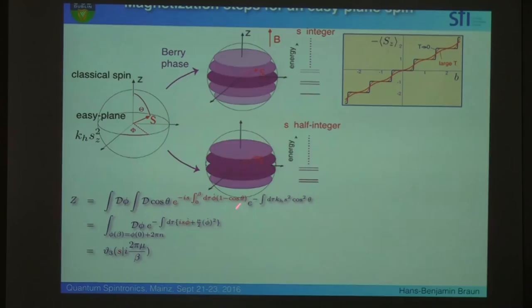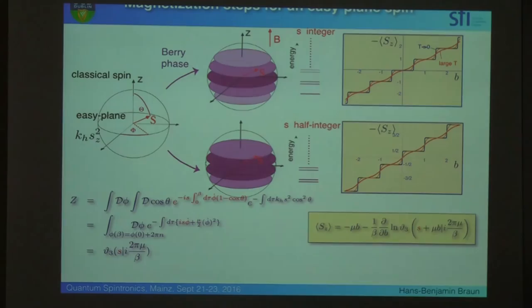And what we end up is this very simple effective action. And this is a theta function here, which also pops up in string theory. And actually, we can write down the expectation value of the spin for all temperatures. So, this is a closed expression for all temperatures. We see actually how a quantum magnet somehow transforms into a classical paramagnet.